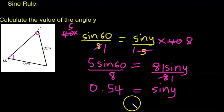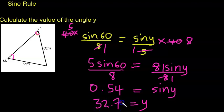So to get the value of y, we use the second function, or shift, the second function sine, 0.54, close bracket. So 32.7 to one decimal point - 32.7 degrees rounded to one decimal point.